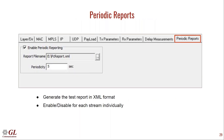Another feature is periodic reports. Periodic reports keep collecting statistics of the streams and writing them to an XML file. This is enabled or disabled for each stream individually. Over a period of time — one hour or 24 hours — these periodic reports can be dumped to the XML file, which can be used for offline analysis and plotting different parameters to see how the network was behaving.